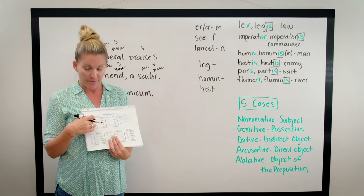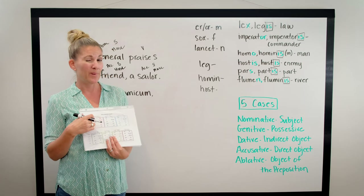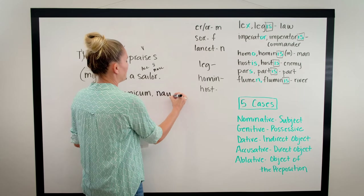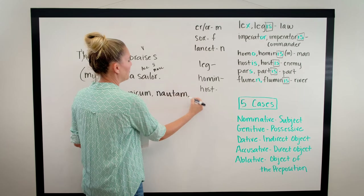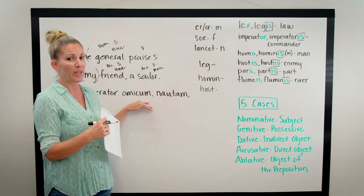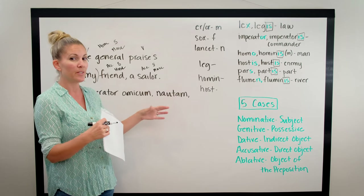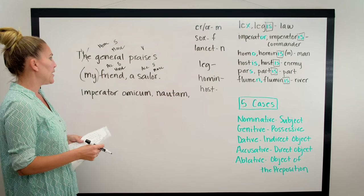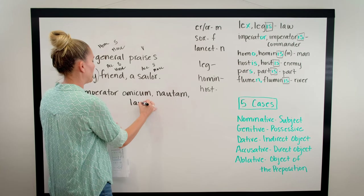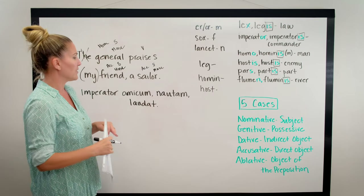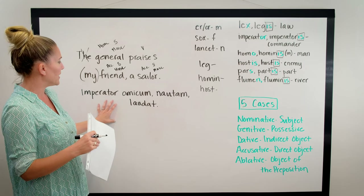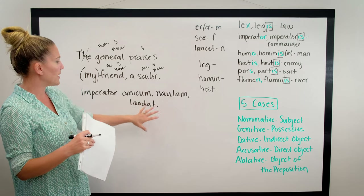An accusative singular ending in the first declension is AM, not UM. So 'sailor' would be 'nautam.' Both 'amicum' and 'nautam' are in the accusative, but they just happen to belong to different declensions, so their endings are slightly different. The word for 'praises' is 'laudat,' so the full sentence would be: 'Imperator amicum nautam laudat.'